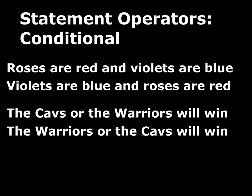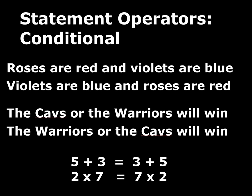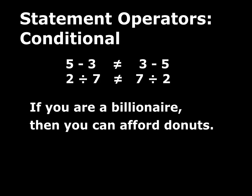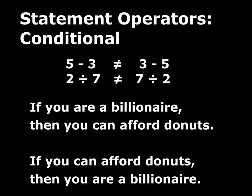The same thing is true with disjunction — order doesn't matter. This is parallel to arithmetic operators. Some are order-invariant: addition, 5 plus 3 is the same as 3 plus 5; multiplication, 2 times 7 is the same as 7 times 2. But for some arithmetic operators order does matter: 5 minus 3 is not the same as 3 minus 5, and 2 divided by 7 is not the same as 7 divided by 2. The same thing is true of conditional: 'If you are a billionaire then you can afford donuts' does not mean the same thing as 'If you can afford donuts then you are a billionaire.' So order matters for conditionals.